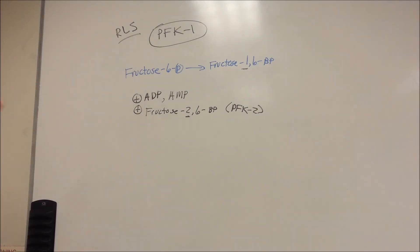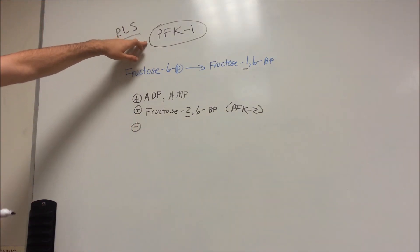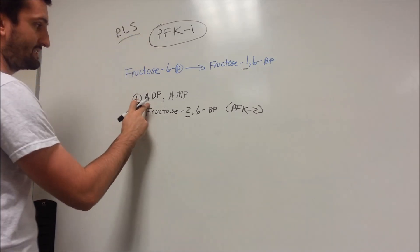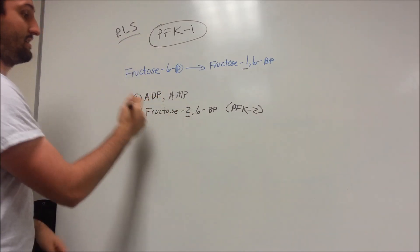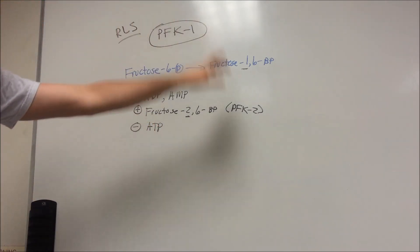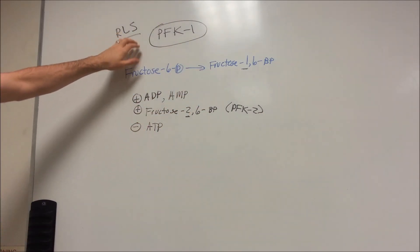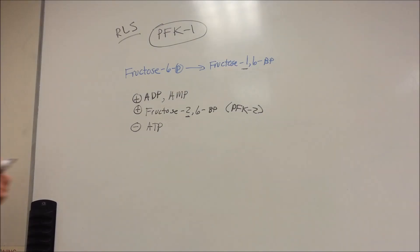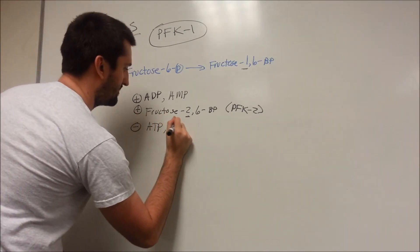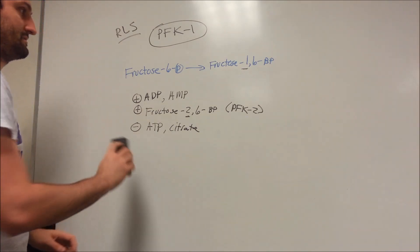What inhibits PFK1? A high level of ATP means your body has enough energy and doesn't need to keep going through glycolysis, so ATP is going to inhibit the rate-limiting step. Also, citrate is going to inhibit PFK1. And cyclic AMP — we'll show you where that factors in shortly.